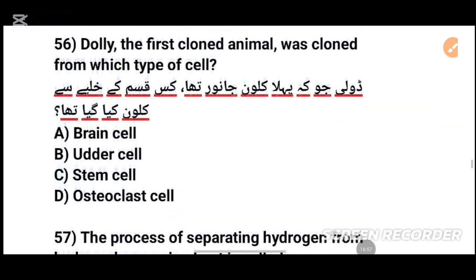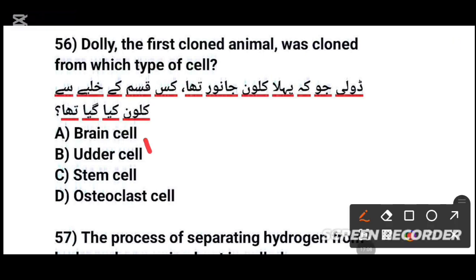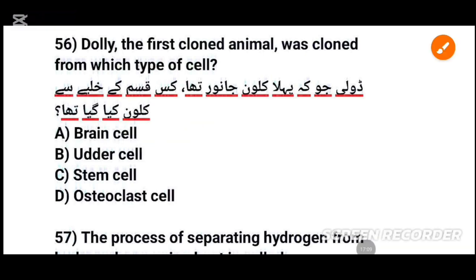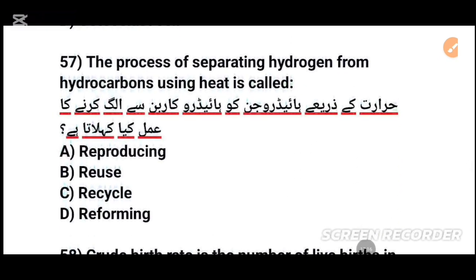MCQs number 56: Dolly, the first cloned animal, was cloned from this type of cell. Dolly جو پہلا clone جانور تھا کس قسم کے خلیے سے clone کیا گیا تھا؟ The answer is adult somatic cell. MCQs number 57: The process of separating hydrogen from hydrocarbons using heat — ہائیڈروجن کو ہائیڈروکاربن سے الگ کرنے کا عمل کیا کہلاتا ہے؟